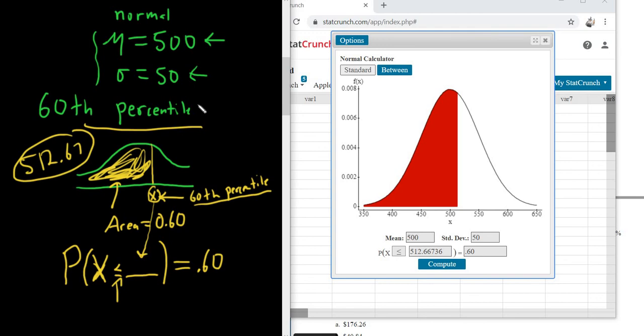So whenever it says percentile, you can just memorize it. You just always pick less than, and you plug in the number over here. So 60th percentile is 0.60, so that goes over here. And then your answer appears right there.